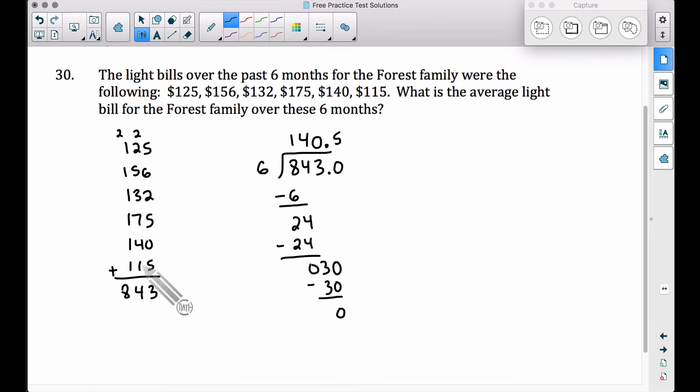So doing this on the calculator very quickly, you can add those up. You get 843. Dividing that by six, we get an average light bill for these six months to be $140.50.